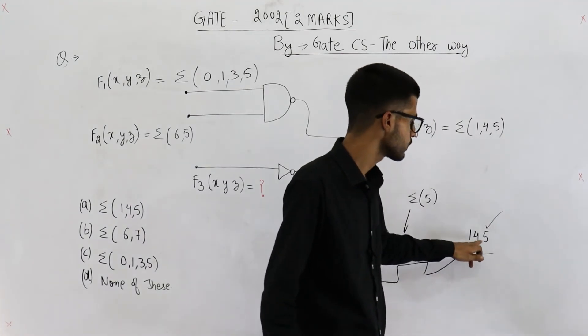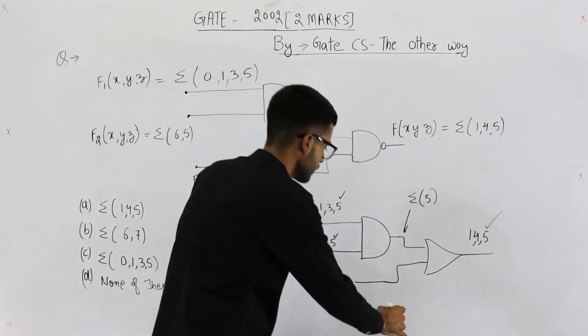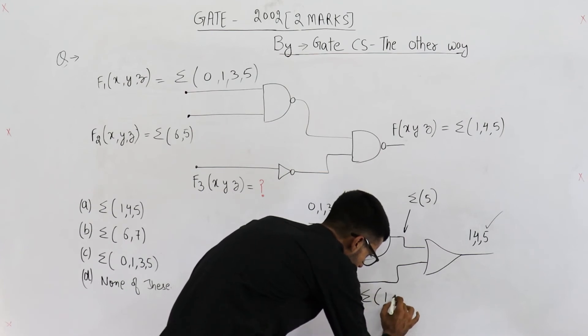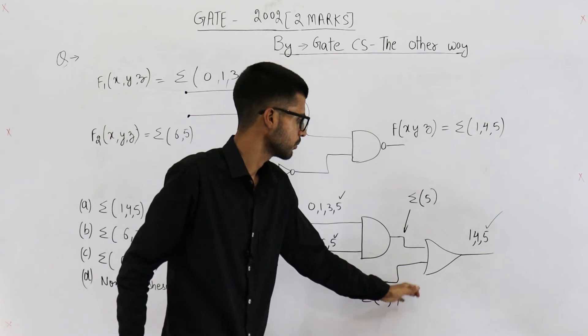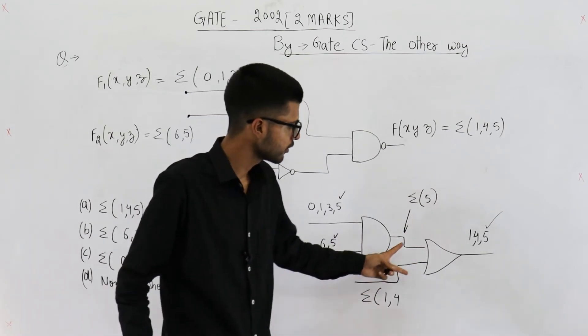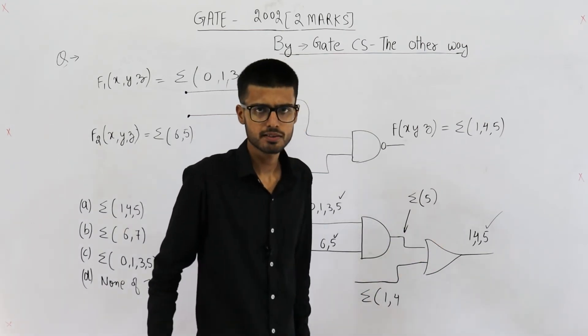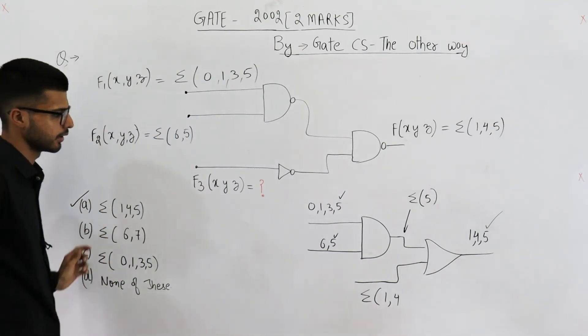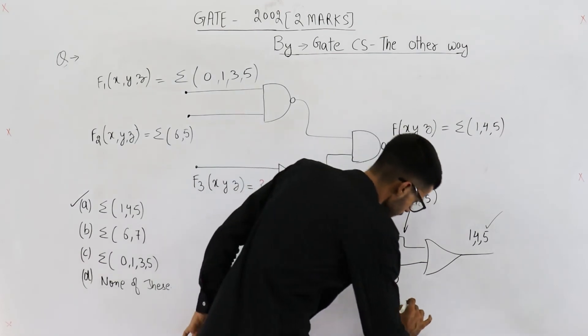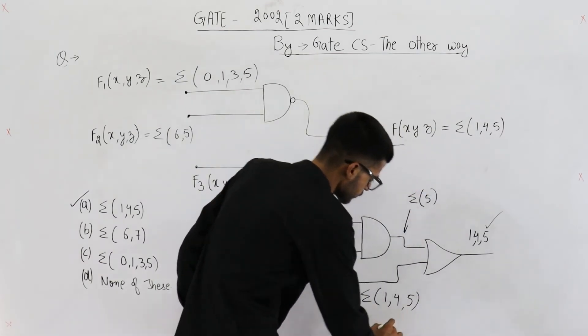Let's now manipulate the second input such that we get output equal to high on one and four. That means this function has to be sigma(1,4). We can have five here as well because even if both the inputs are high, still OR gate is going to output a high. You can see that is option A: one, four, and five.